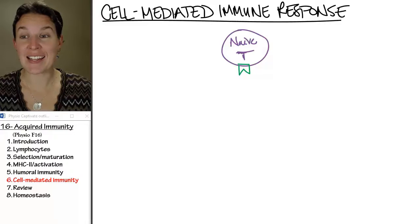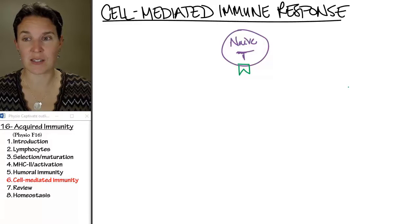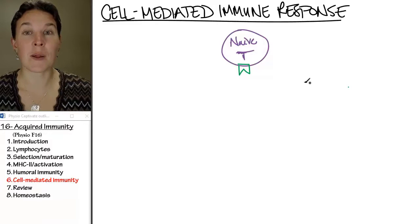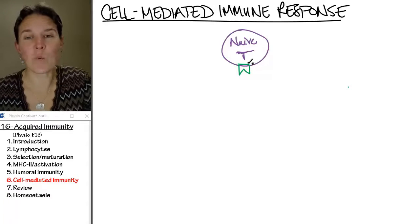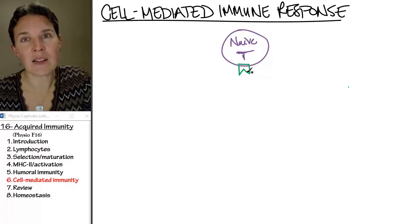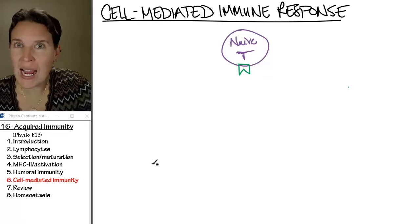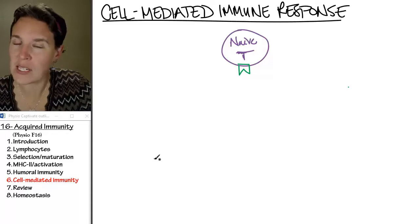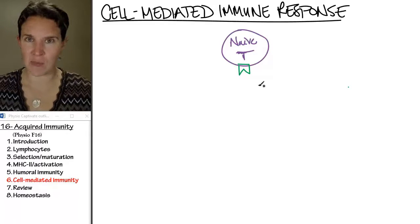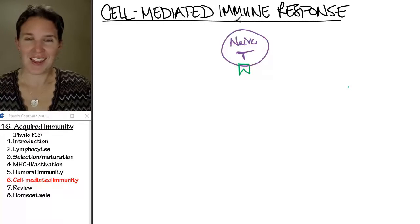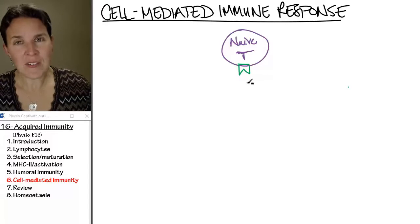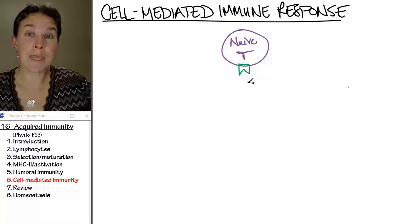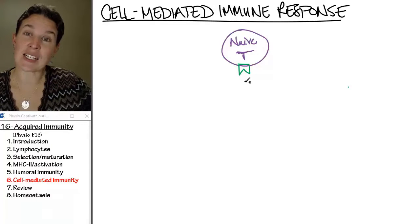Look, it's a naive T cell this time. Okay, looks like it's going to work. So we're starting in the same spot. This is a T cell that is going to give rise to the helper T cell that came over and activated our B cells. It's not activated yet — naive T cells don't bind their antigen yet.